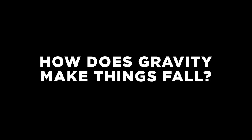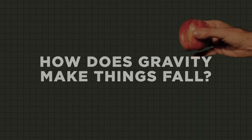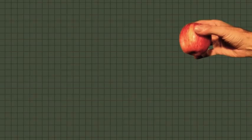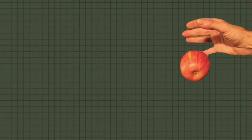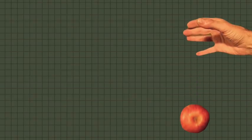How does gravity make things fall? When you let go of an object, why does it immediately start to move toward the ground, accelerating until it hits something?